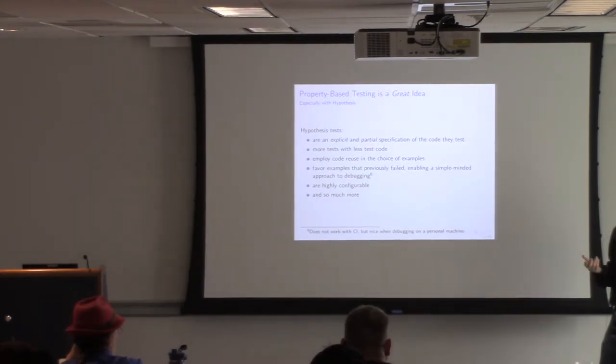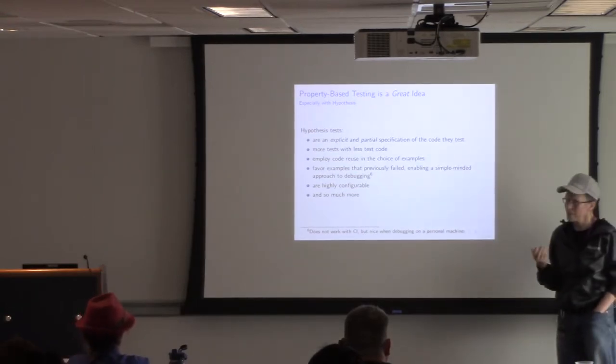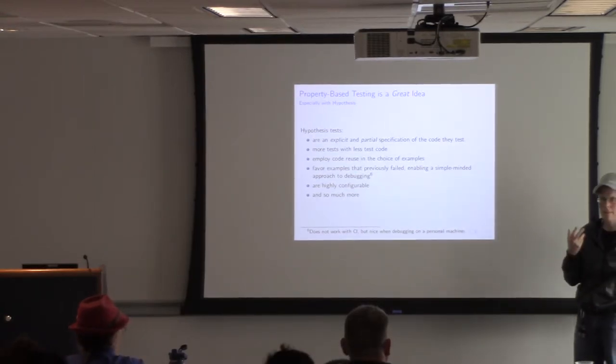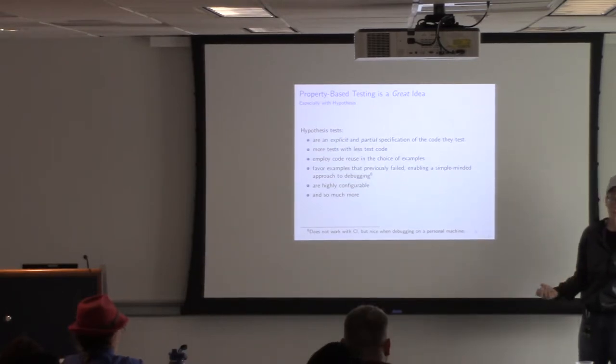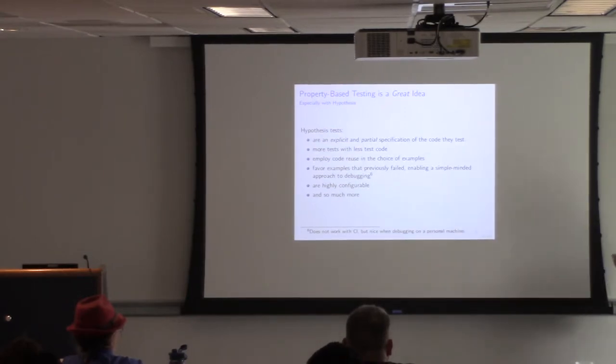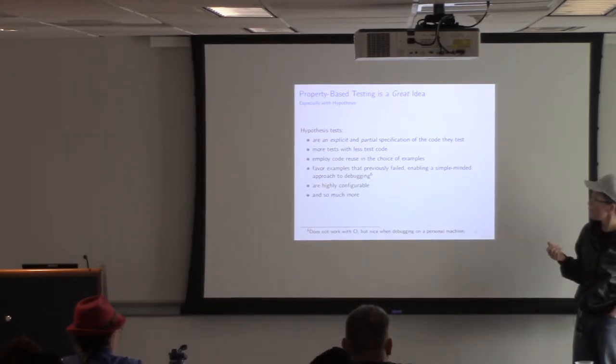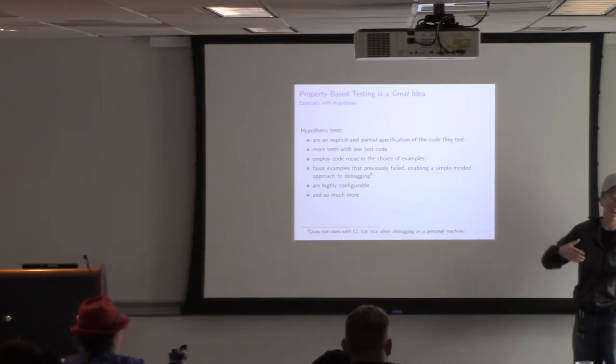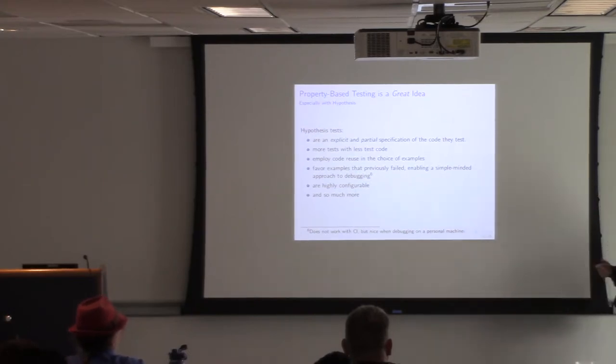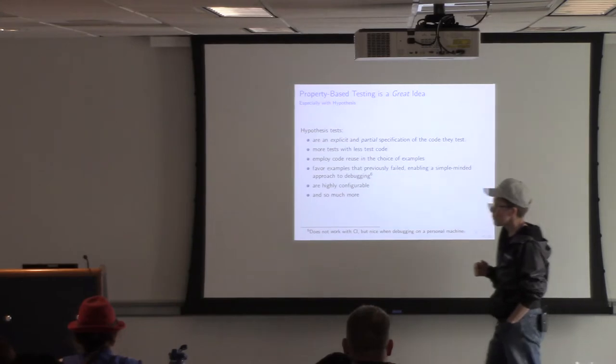And then the other thing is this database of failures that hypothesis keeps around. That's really nice too because now it has a property that it wants to check, but the next time you run after you've failed, it goes straight to the thing that failed last time and tries that first. So you can actually be less clever than you would want and perhaps want to be with, than you might have to be with example-based tests where you probably do something to make sure that the example that was interesting somehow got to the top. Hypothesis does that for you, so that's great. And in fact, Hypothesis does a huge amount of other stuff, which I'm going to sort of mention at the end and let you decide if there's any particular thing you want me to talk about more.